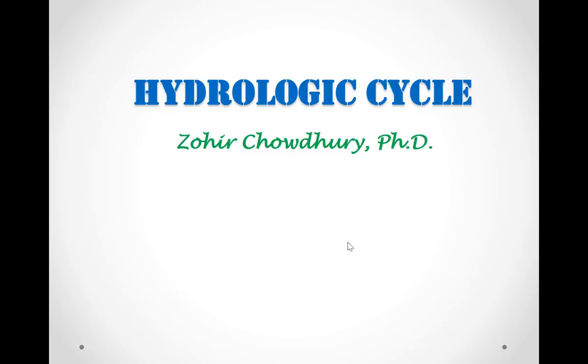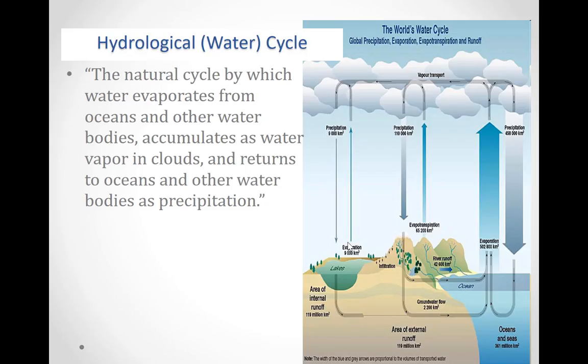Hello everybody, my name is Zohiri Choudhury and right now we'll talk about the hydrologic cycle. So what is the hydrologic cycle, or the water cycle? Water is in continuous motion — the natural cycle by which water evaporates from oceans and other water bodies, accumulates as water vapor in clouds, and returns to oceans and other water bodies as precipitation.